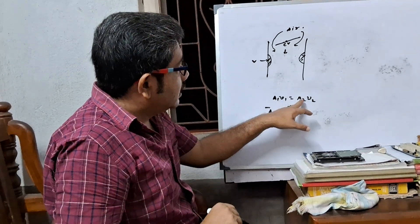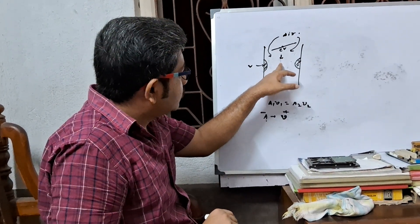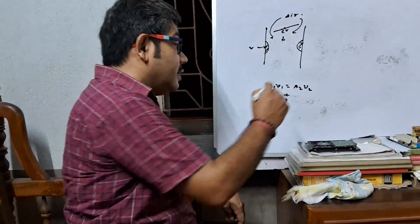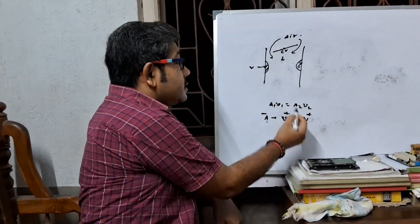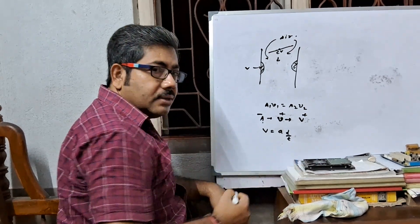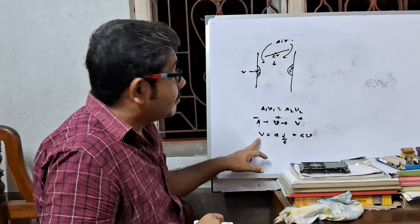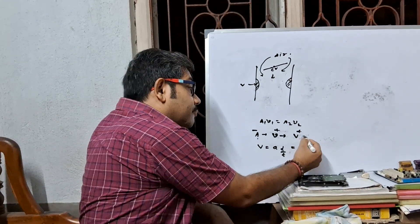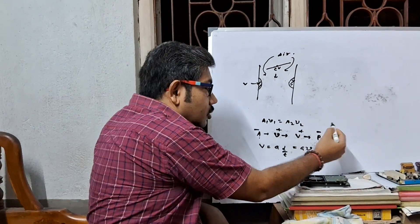So when air passes through the venturi gap and area decreases, velocity will be increased. If velocity increases, then volume will also increase — because volume equals area into distance, and dividing by time gives area into velocity. Remember: small v for velocity, capital V for volume. So velocity increases and therefore volume increases.